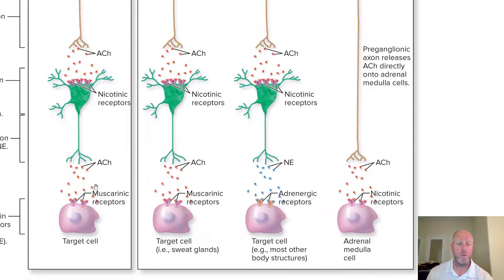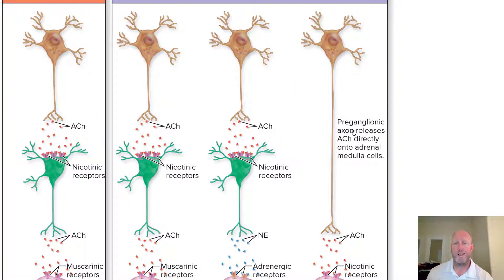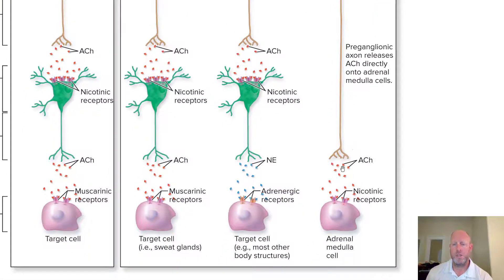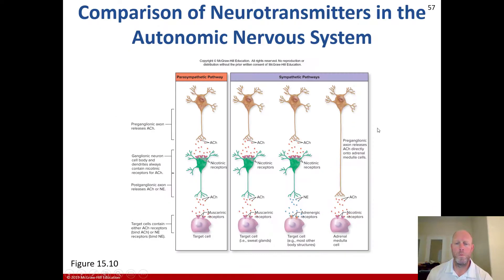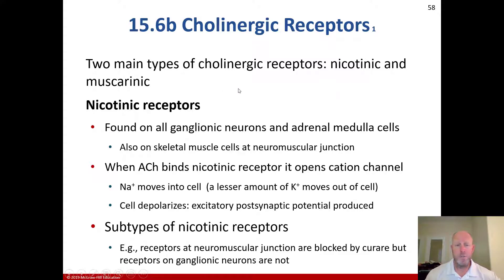With the parasympathetic pathway, there's also an instance where the preganglionic axon releases acetylcholine directly onto adrenal medulla cells, in which case acetylcholine binds with nicotinic receptors on the adrenal medulla cell. Those specific content areas in this diagram will not be on the exam, but you should understand the concepts, because you will need to know that the two main types of cholinergic receptors are nicotinic and muscarinic.